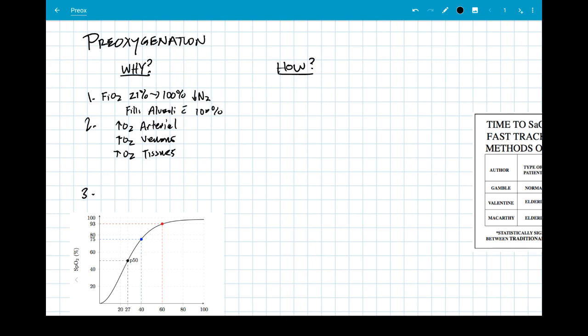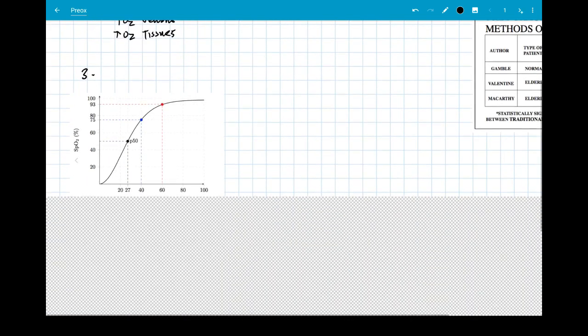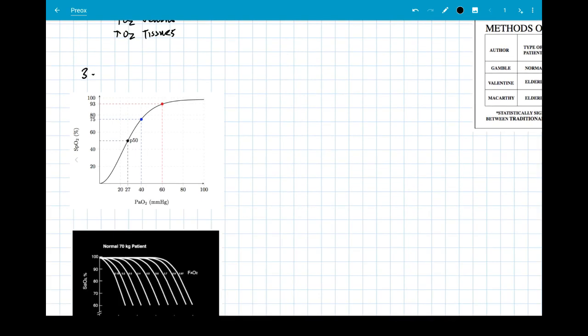So why should we be worried, though? Why do we want everything saturated with as much oxygen as possible? Well, that goes on to point number three, and I'm going to explain this in a series of graphs. The first graph is the oxyhemoglobin dissociation curve. If you notice on the graph, the PaO2 is on the x-axis, and the percent oxygenation of hemoglobin is on the y-axis.